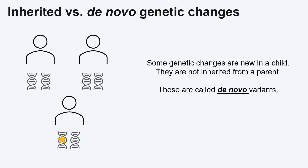De novo variants happen in the sperm, egg, or during an individual's development. Using the same example, if neither parent has a variant that causes Duchenne muscular dystrophy, but their child has a variant that causes Duchenne muscular dystrophy, the child has a de novo or new variant.